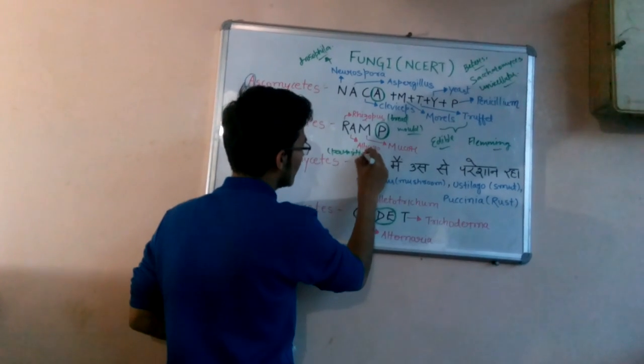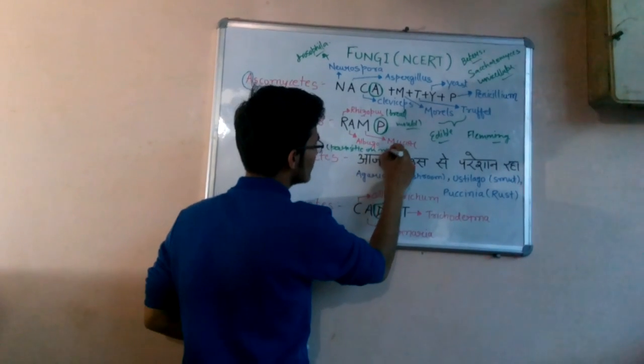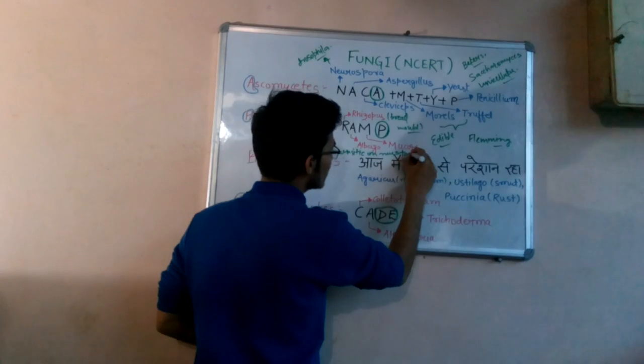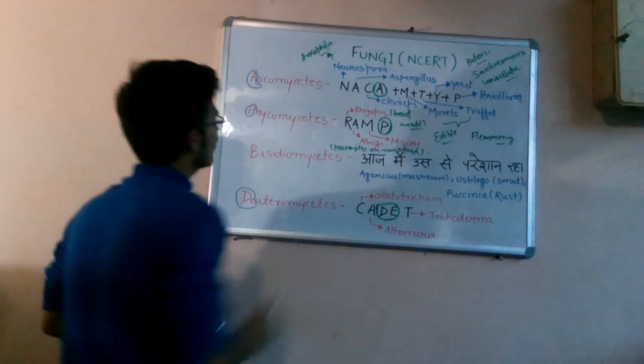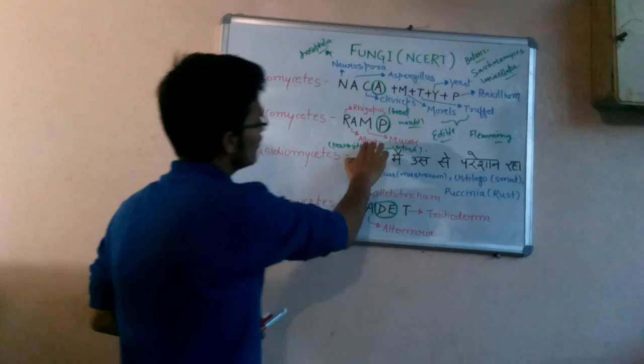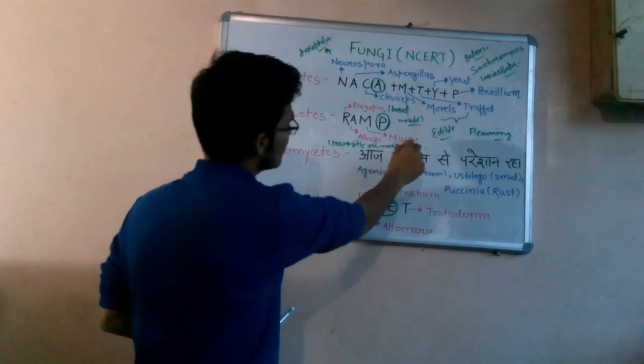This is a very important question from Phycomycetes: that Rhizopus is the bread mold and Albugo is parasitic on mustard.